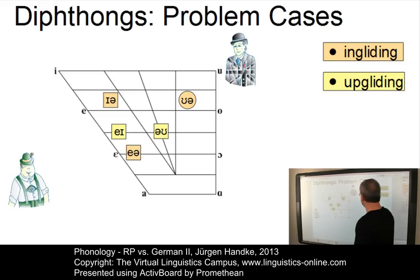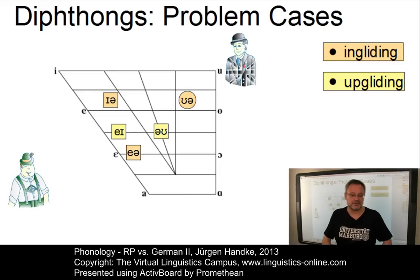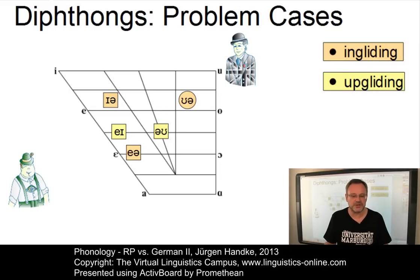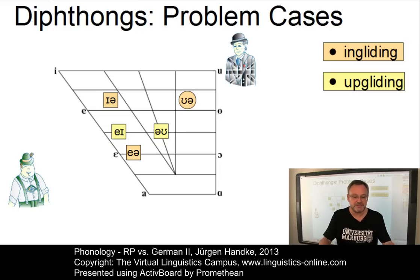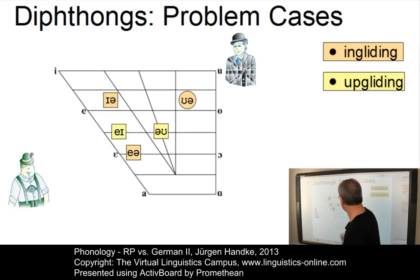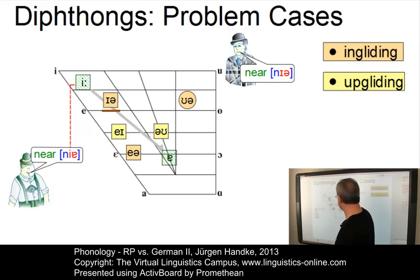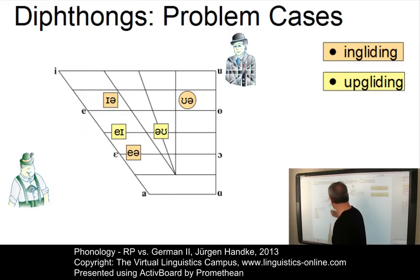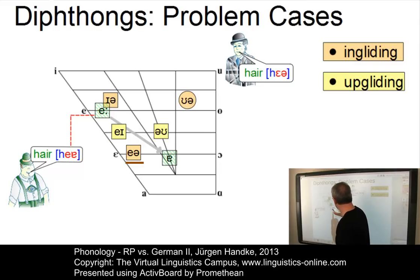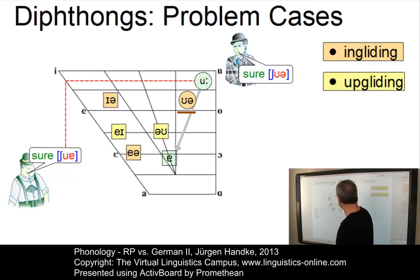But what about the problem cases? The three ingliding diphthongs involve the same problem: they occur in words with a post-vocalic orthographical R, where German uses a down-gliding diphthong. Thus, they are typical examples of realisational contrast. So we are saying NEAR instead of NEAR, HERE instead of HER, and SURE instead of SURE.